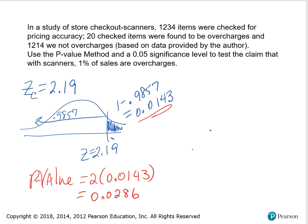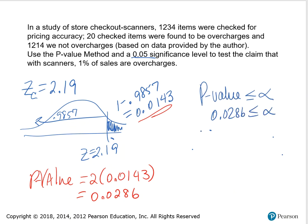Comparing the p-value to the significance level: 0.0286 is less than or equal to alpha of 0.05. Therefore, we reject H sub 0, the null hypothesis.